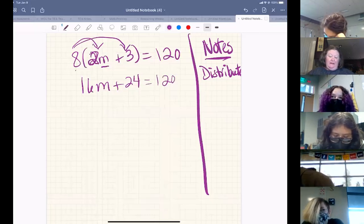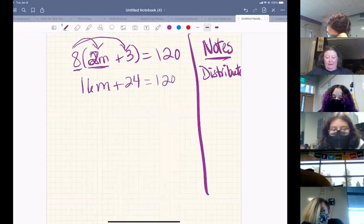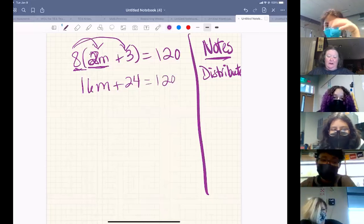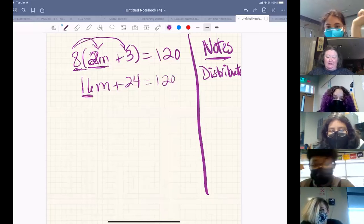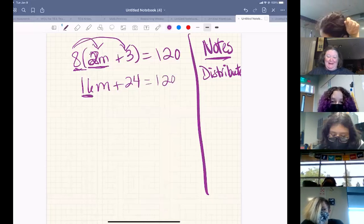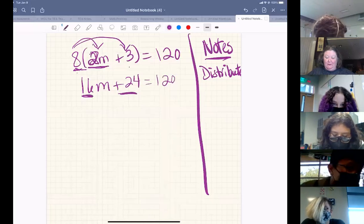So this was eight times 2M, eight times two is 16. That two is connected to the M, so we're going to end up with 16M. And then eight times three gives us this 24.